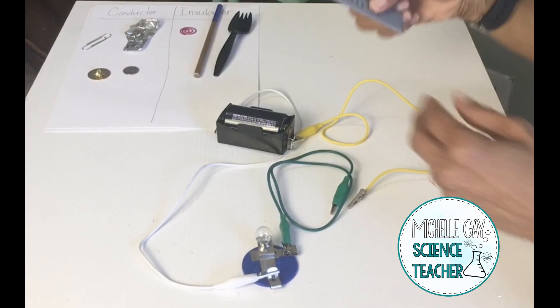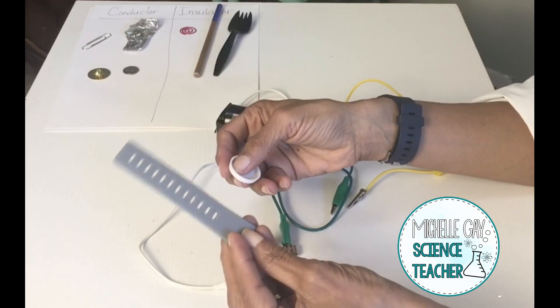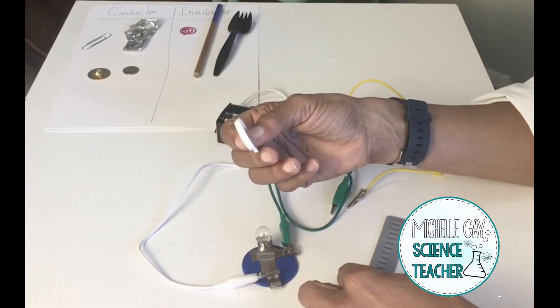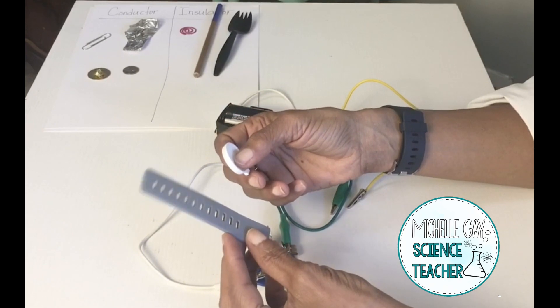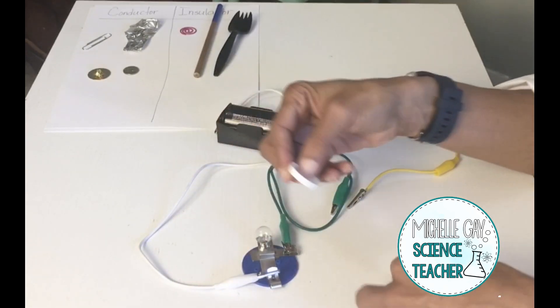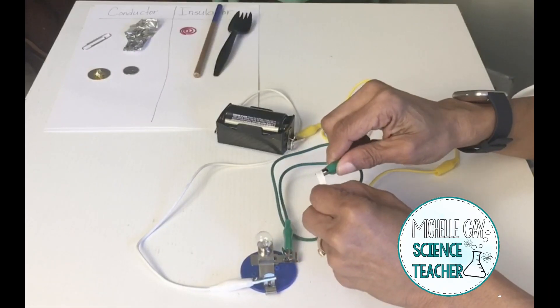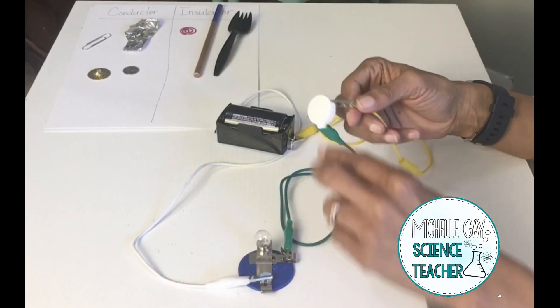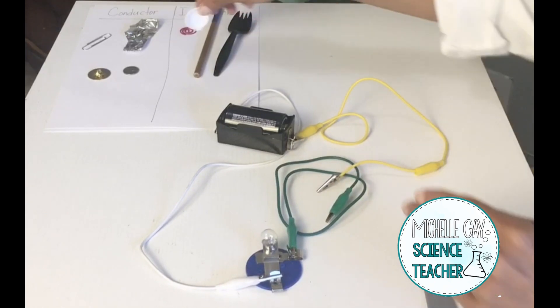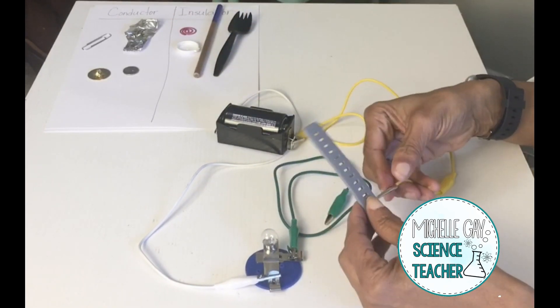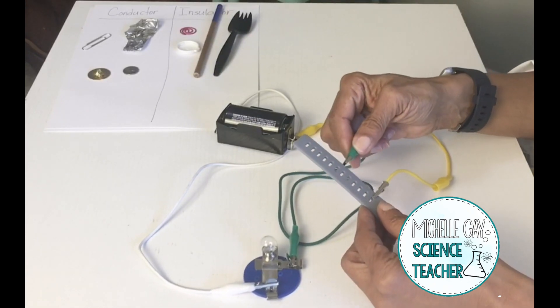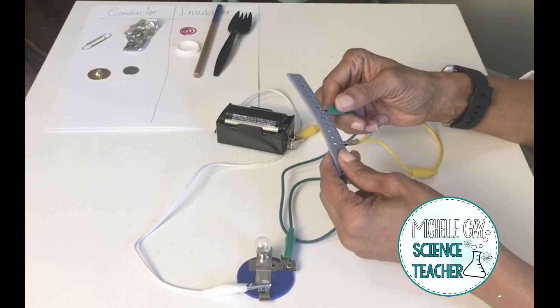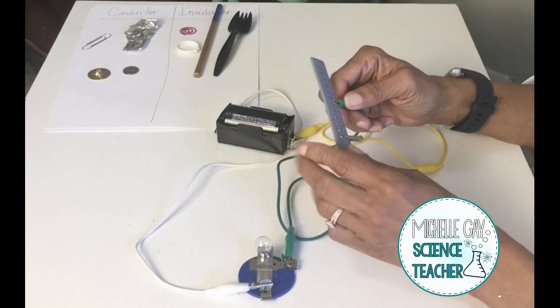So we have two more left. We have this watch band, part of a watch band, which is rubber and silicone material. And then we have this cap, which is plastic. Are these conductors or are these insulators? Let's test. The plastic cap is an insulator. And let's test this watch band. It is an insulator because the light bulb did not come on and it broke the circuit or stopped the charge from flowing.